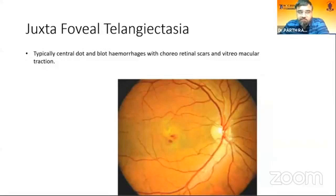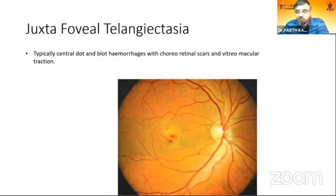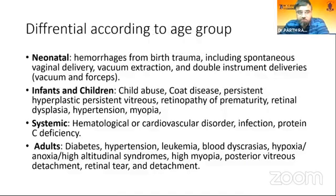In macular telangiectasia, we can also see dot and blot hemorrhages, typically in the central area, and chorioretinal scars can also be present. In MacTel, vitreomacular traction can also be seen.